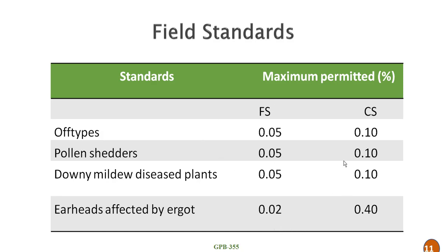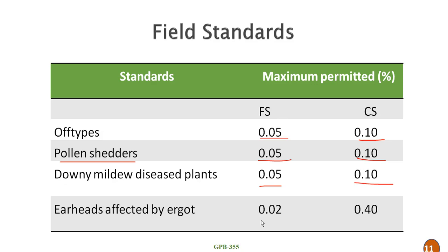Field standards — maximum permitted percentages: for off-types, foundation seed is 0.05% and certified seed is 0.10%. For pollen shedders, foundation seed is 0.05% and certified seed is 0.10%. For downy mildew diseased plants, 0.05% in foundation seed and 0.10% in certified seed. For earheads affected by ergot — which is a predominant disease of pearl millet — the maximum permitted percentage is 0.02% in foundation seed and 0.40% in certified seed.